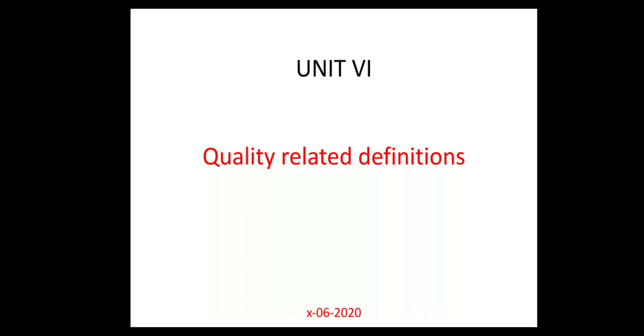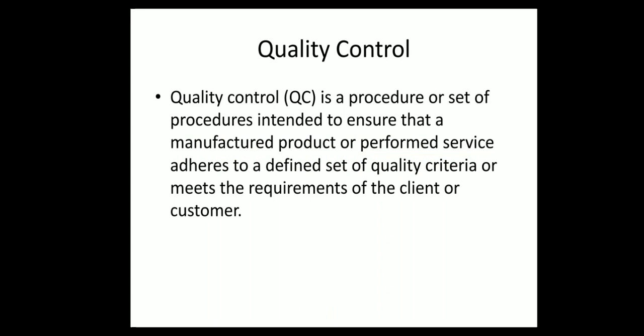Quality related definitions. This comes in Unit 6. Quality control is a procedure or set of procedures intended to ensure that a manufactured product or performed service adheres to a defined set of quality criteria or meets the requirements of the client or customer.